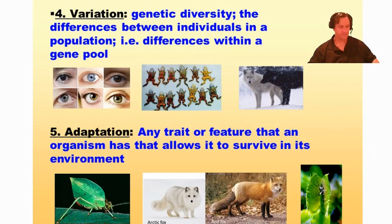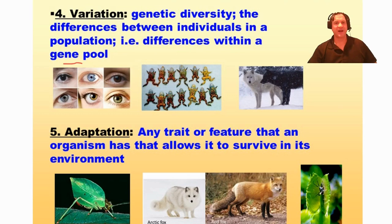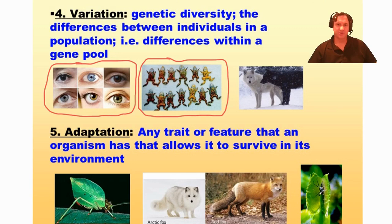The next term is variation — genetic diversity, meaning the differences between individuals in a population or differences within a gene pool. For example, humans are all members of the same species, Homo sapiens, but have variations in eye color. In a population of frogs, you can see variation in the coloring of the ventral surface of their bellies — some are red, some orange, some yellowish. In a population of wolves, there is wide variation in fur color — some are black, some white, and some brown or gray. There is a lot of diversity within populations of organisms.